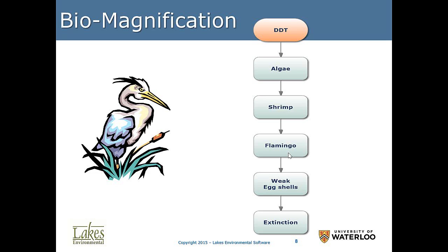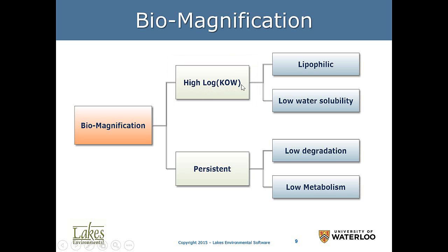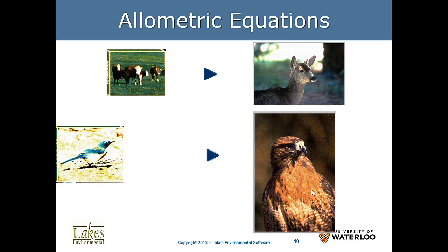Biomagnification relies on a property of these chemicals called log KOW — the octanol-water partitioning coefficient, which we addressed in the fate and transport lecture. Because KOW changes over many orders of magnitude, we work with log base 10 of KOW. A high log KOW indicates the chemicals are lipophilic with low water solubility. These chemicals must also be persistent — meaning they will not degrade over time and the body cannot metabolize them — so they stay in the body and accumulate from one trophic level to the next.